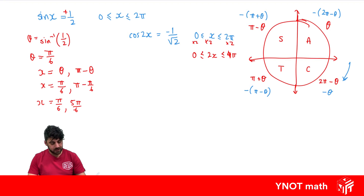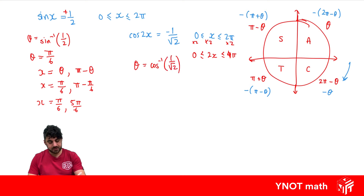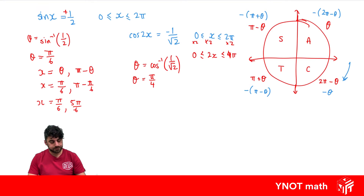Let's go ahead and solve. First we need our base angle theta, which we get by taking the inverse cos of 1 on root 2 — disregarding the negative sign. This gives us theta equals pi on 4.